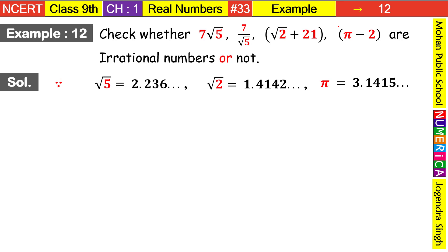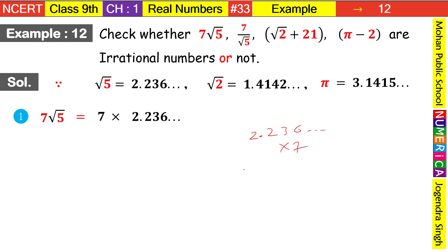Now for the solution, our first number is 7√5, that means 7 × √5. We replace √5 with its value 2.236. Now, how do we multiply an endless number by a regular number? How do we multiply 7 by an endless number? See: 2.236... × 7 — the triple dot (endless part) carries through as-is.